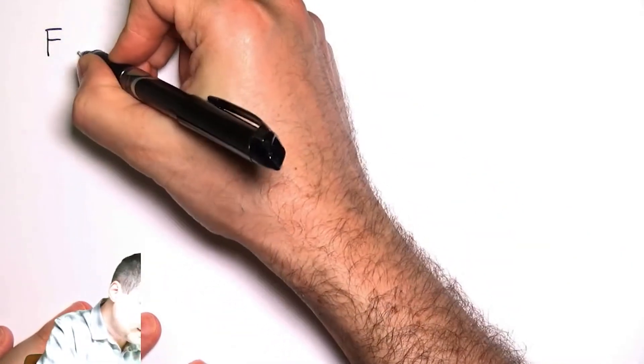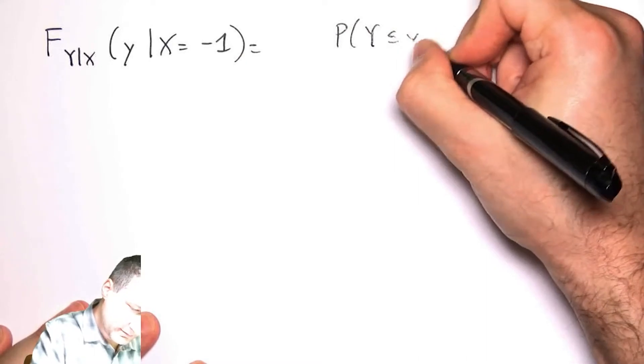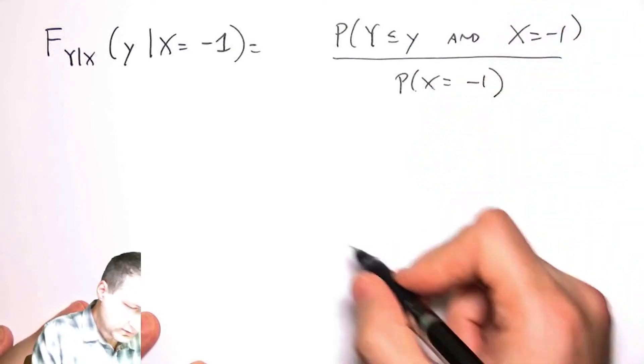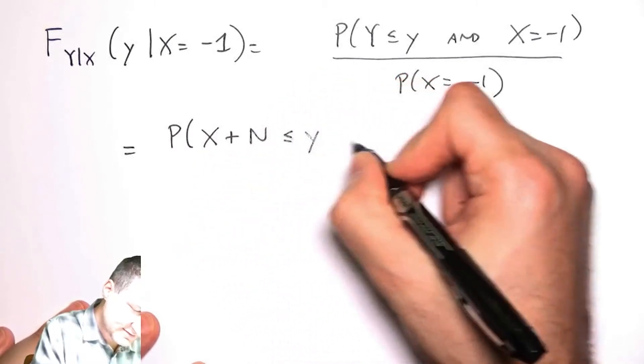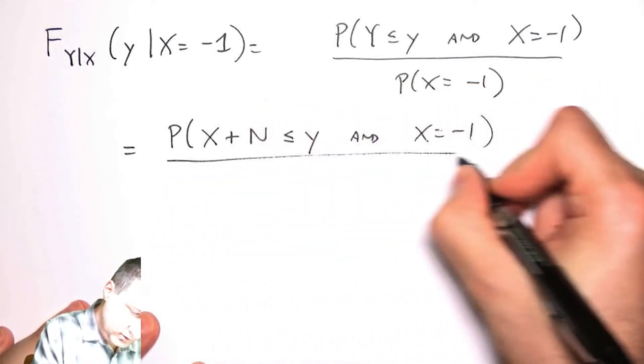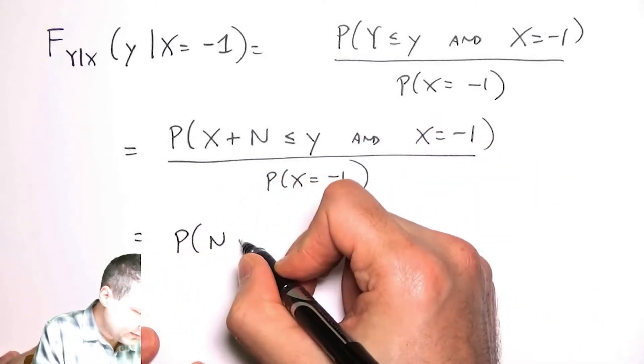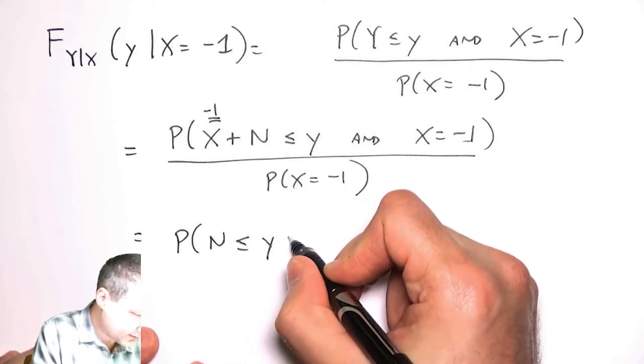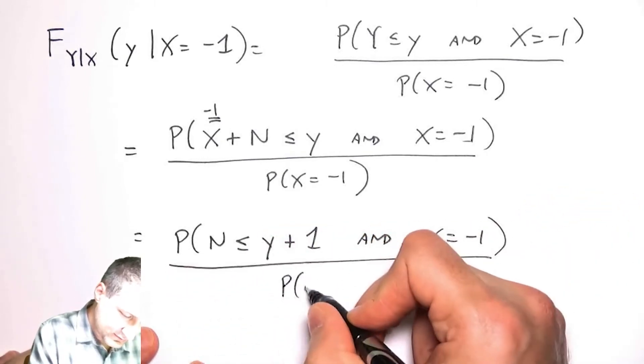Let's do this from first principles. Just do the minus one case. So the CDF is the probability that I'm less than this value. Let me be really precise. This is like saying the probability that y, which is x plus the noise, is less than this value, which is a different way of saying the probability that n, and here since x is minus one, is like saying the probability that noise is less than or equal to y plus one, and x equals minus one, over this probability.